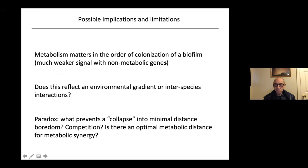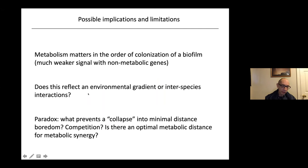One interpretation is that organisms metabolically more similar to each other will have metabolites to share and can gradually connect metabolically, building the biofilm. We also observed that if you look at the same property for non-metabolic genes, you don't see this clear distinction between distributions. There are different possible interpretations — this could reflect organisms building on top of each other, or partially reflect an environmental gradient, such as more anaerobic conditions at the bottom of the biofilm becoming increasingly aerobic as it grows.